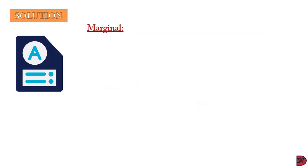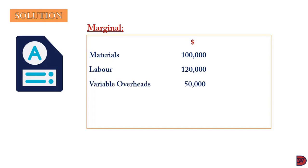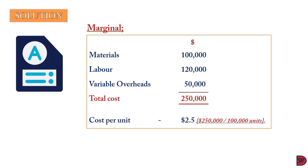Under marginal costing, we are only going to consider the variable costs. We start with materials, which is variable, then labour — also variable — at $120,000, and variable overheads of $50,000. We sum these up, giving $250,000. We then divide by the total number of output produced, 100,000 units, arriving at a cost per unit of $2.50.